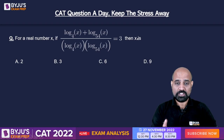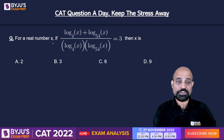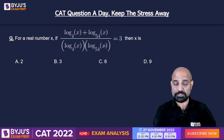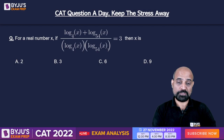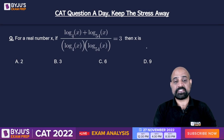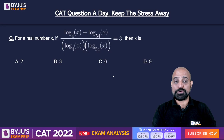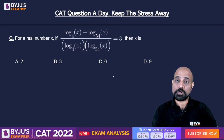So let's solve one question on log. For a real number X, if log X to the base 4 plus log X to the base 54, whole divided by log X to the base 4 into log X to the base 54, is equal to 3, then find X.